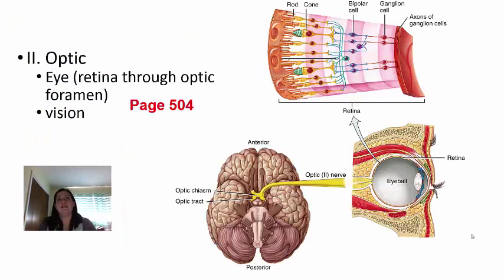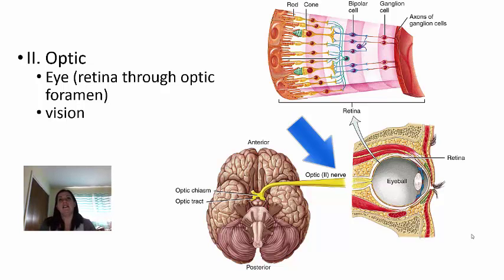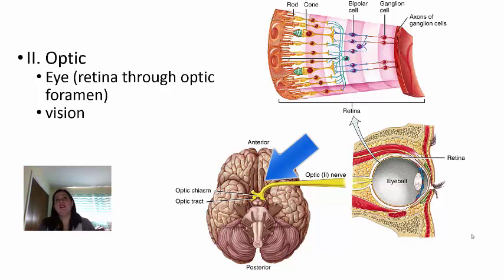Cranial nerve two is the optic nerve. Its extensions are in the retina of the eye, where rods and cones collect information to send to the optic nerve. The optic nerve is found at the very back of the eyeball and travels through the optic foramen. It then goes through the optic chiasm — the crossing point — where what you see in your right eye is interpreted by the left side of your brain and vice versa. The optic nerve is for vision only and is a sensory-only nerve.